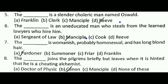Next question: The dash is womanish, probably homosexual, and has long blonde hair. The correct answer is A, that is the Pardoner. Next question: The dash joins the pilgrims briefly but leaves when it is hinted that he is a cheating alchemist. The correct answer is B, that is the Canon.